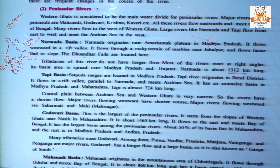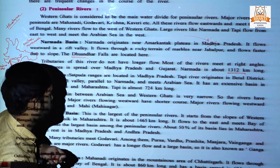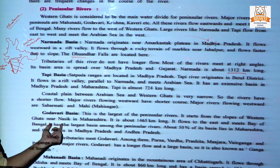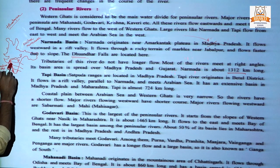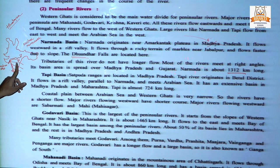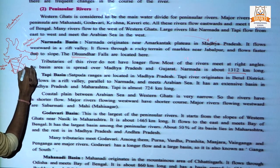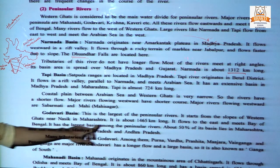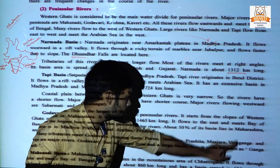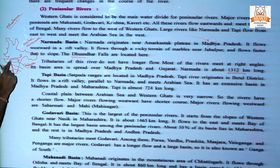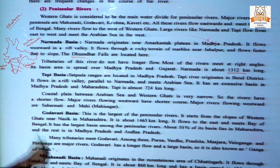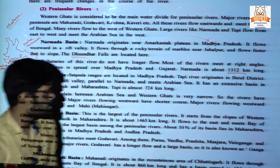Godavari Basin: Godavari is the largest of the Peninsular rivers. It starts from the slopes of the Western Ghats near Nasik in Maharashtra. It is about 1465 kilometers long. It flows eastward and meets the Bay of Bengal. It has the largest basin among the Peninsular rivers.